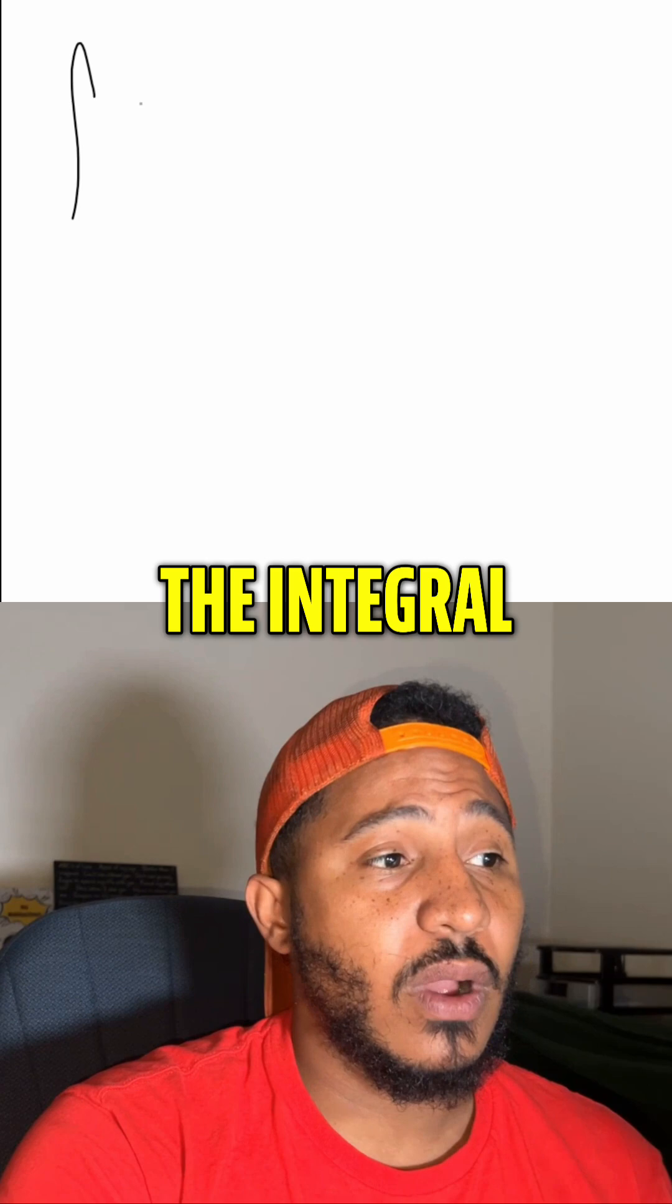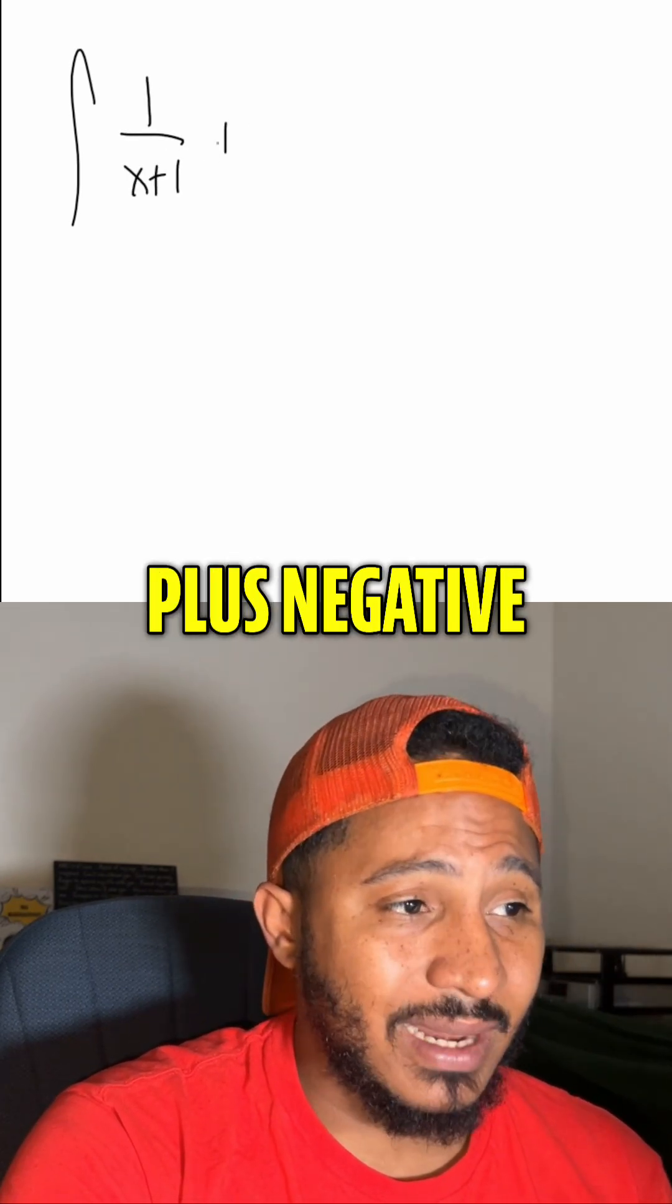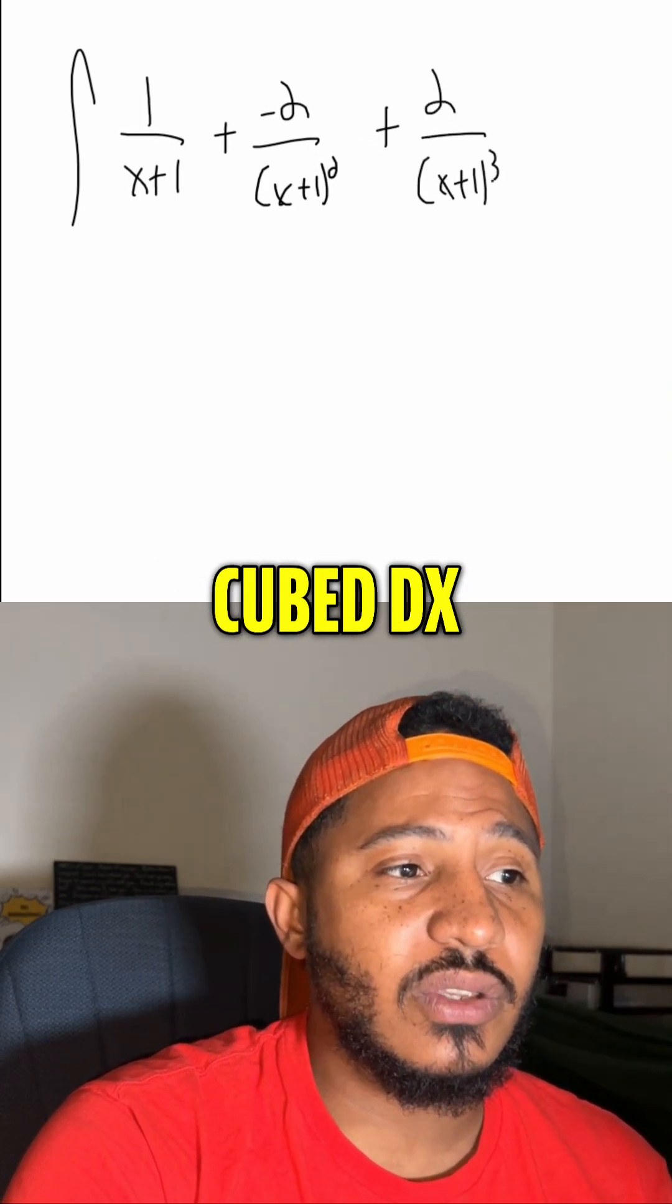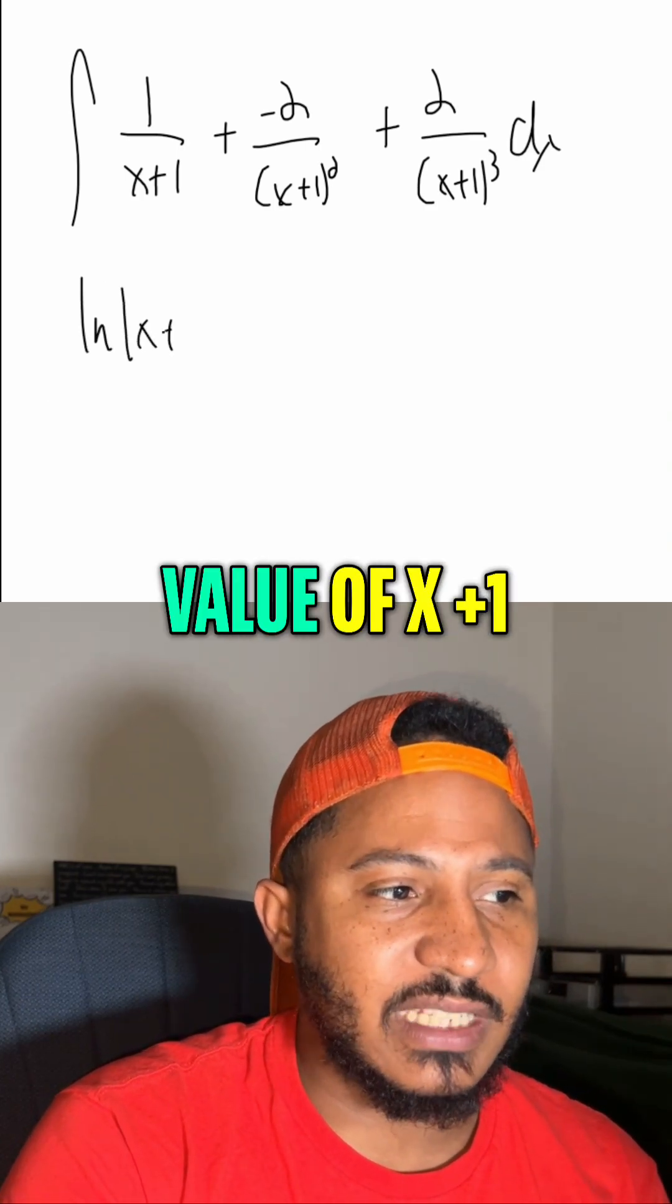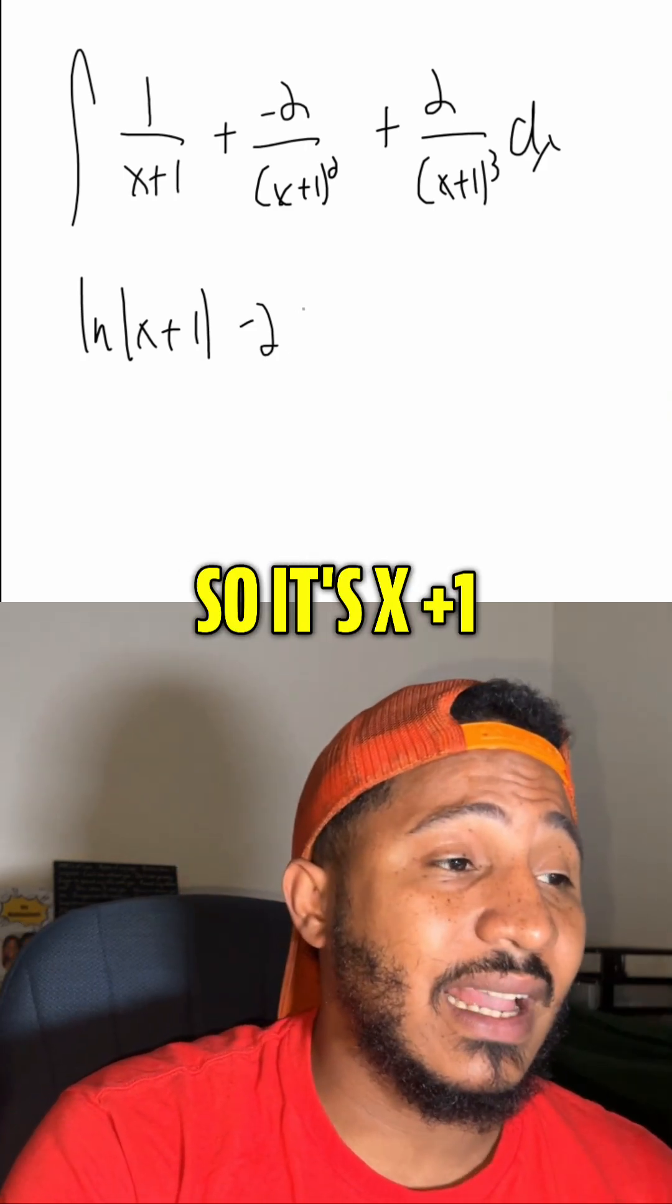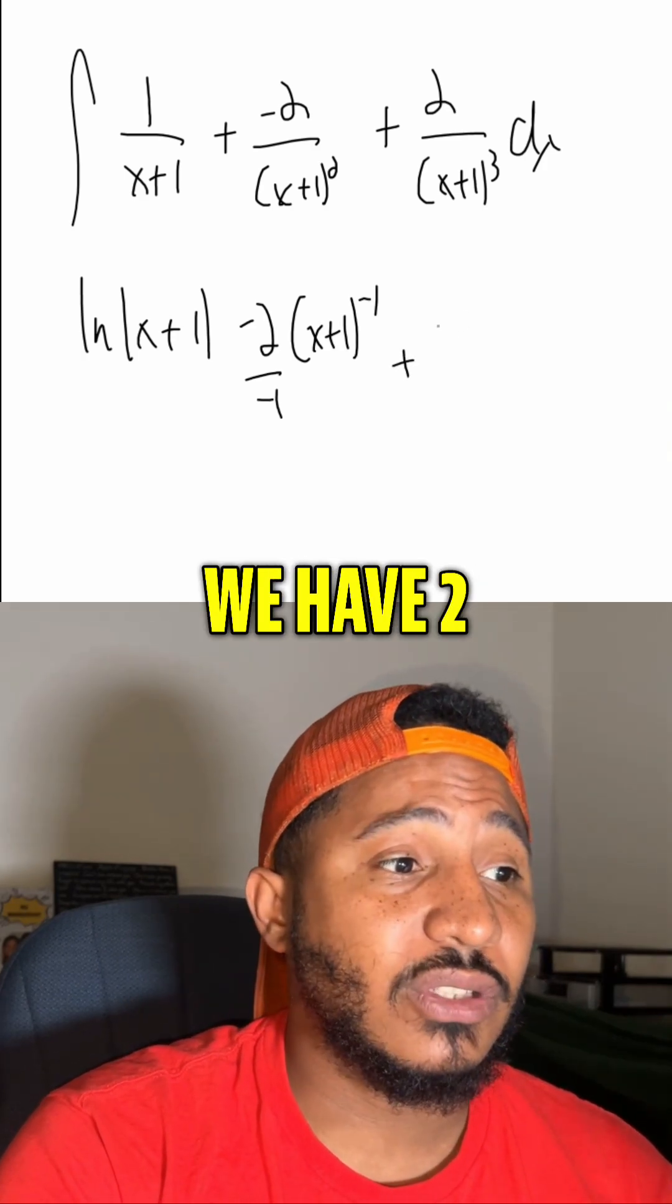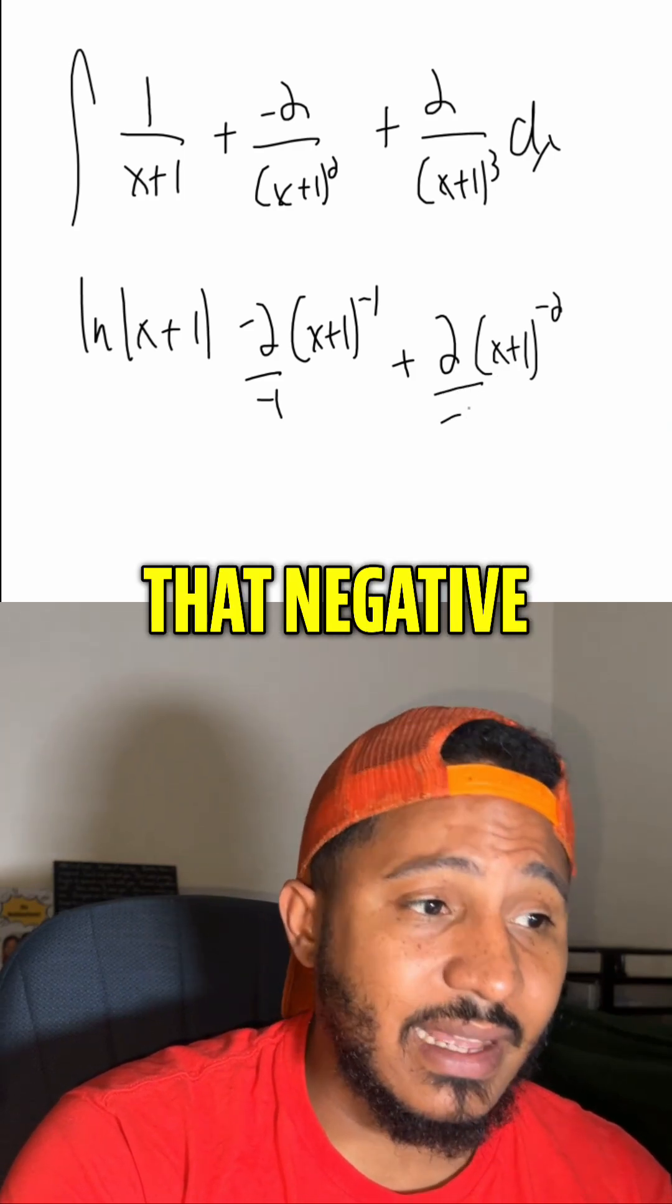Thus, our new integral becomes the integral of 1 over x plus 1 plus negative 2 over x plus 1 squared and then plus 2 over x plus 1 cubed dx. And now, we know that this first one would be the ln of the absolute value of x plus 1. The second one would be negative 2 and then now we use our power rule. So it's x plus 1 to the negative 1 divided by that negative 1. And the third one is similar. We have 2. This becomes x plus 1 to the negative 2 divided by that negative 2.